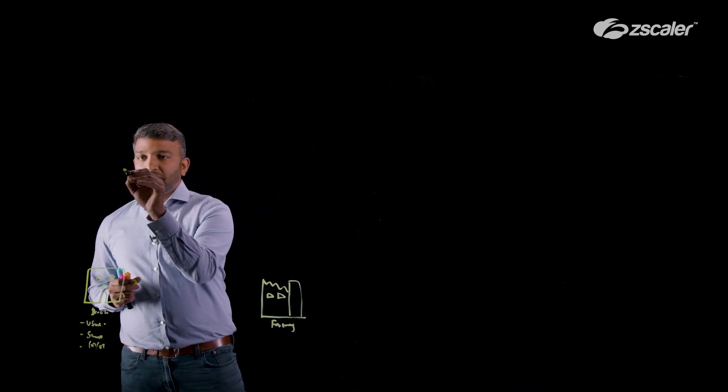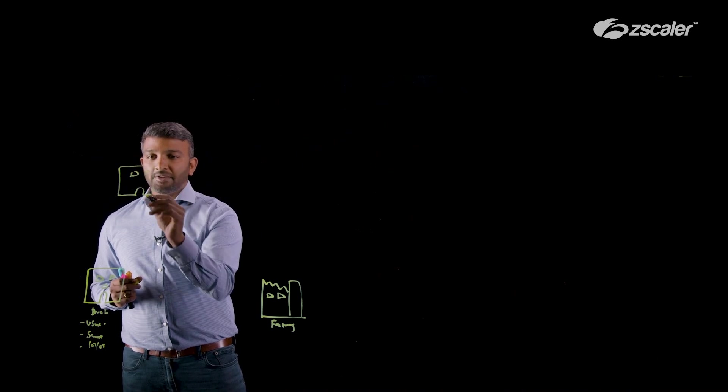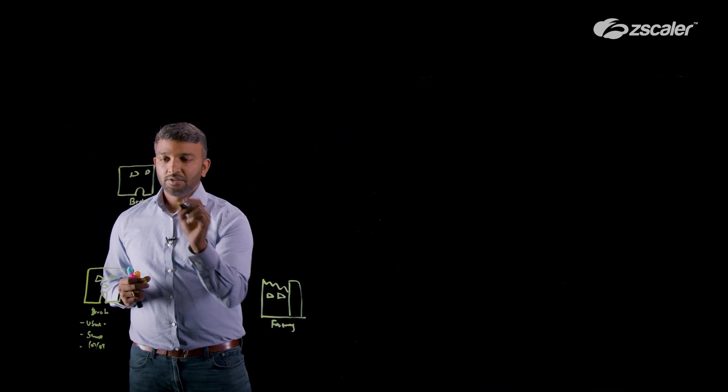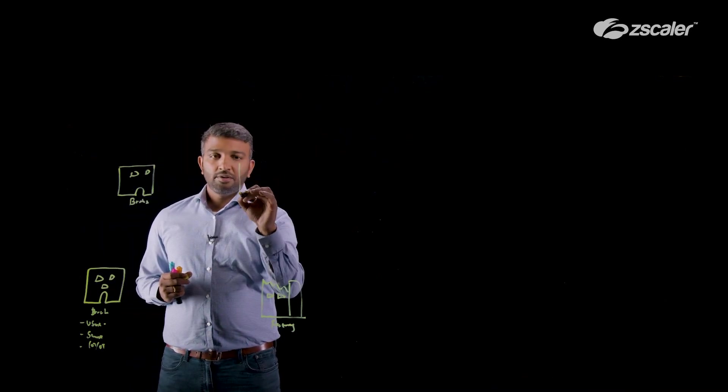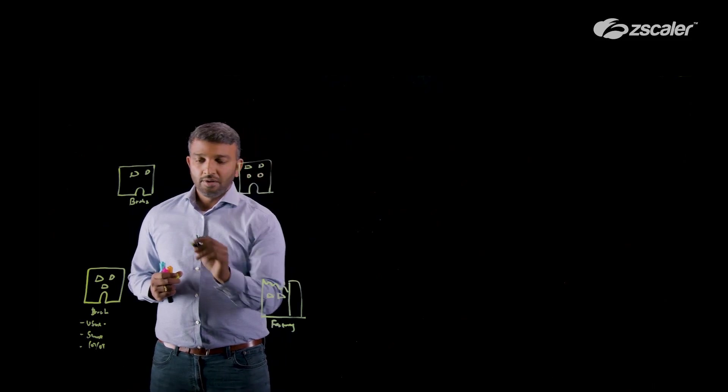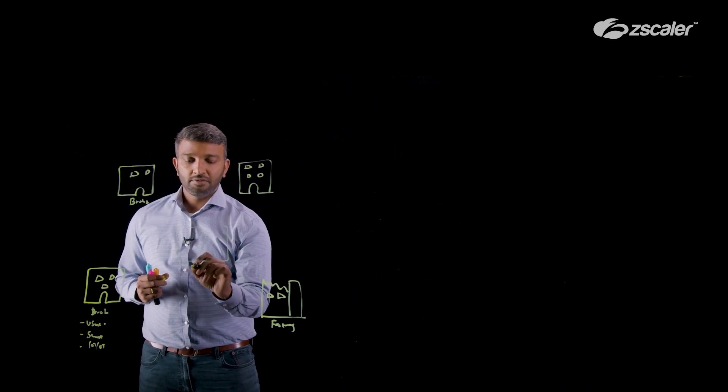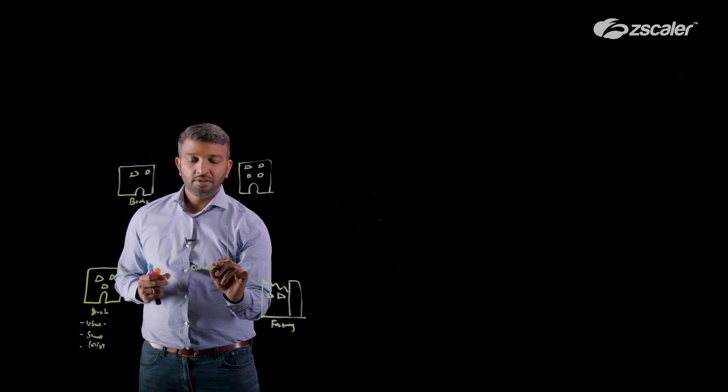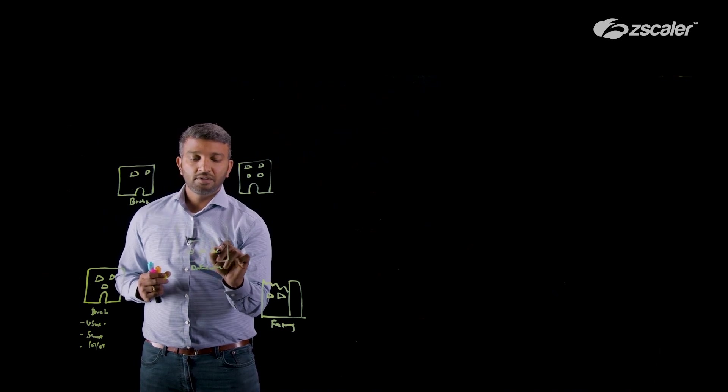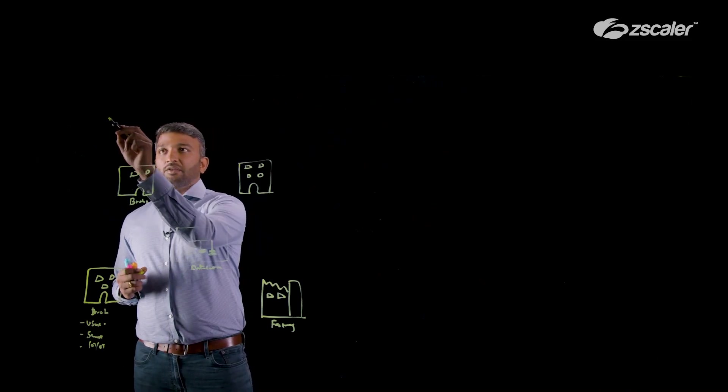Let's pick some more branch offices and see how all this connectivity looks like. You have a branch office 2, you have another branch office in a different region or metro, and you still have data centers for most of the customers. And they have some applications and servers and services which are run from this location.